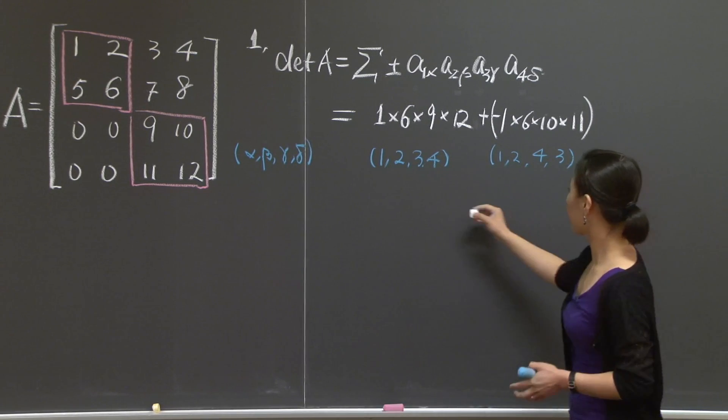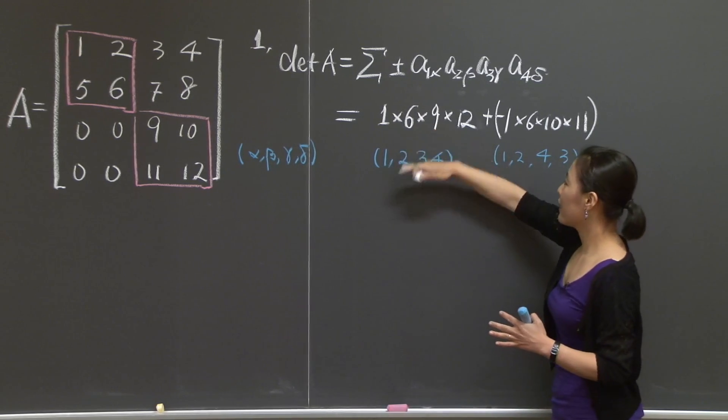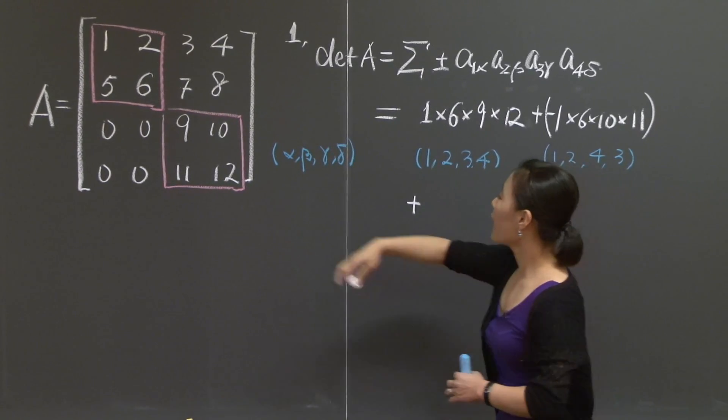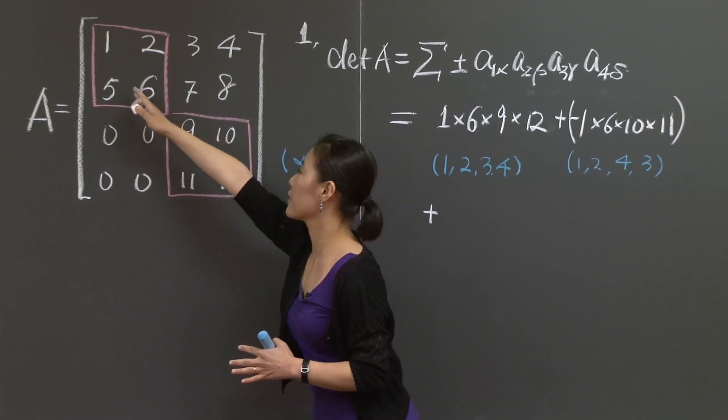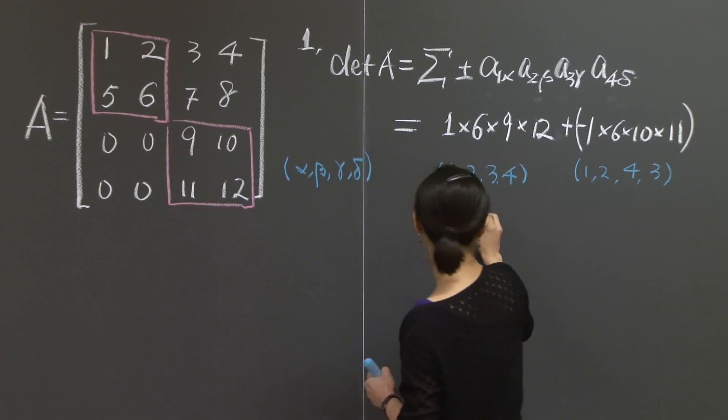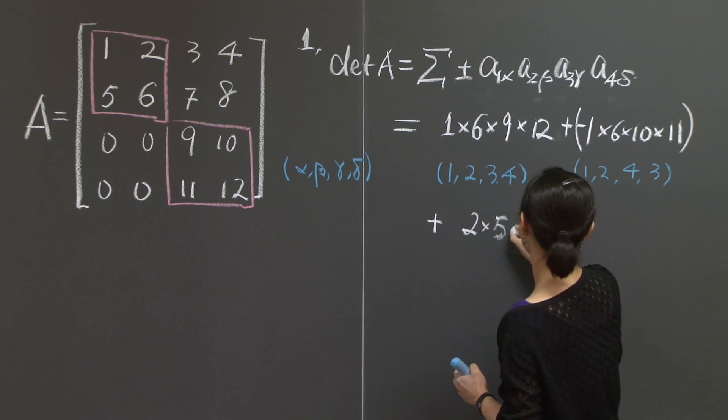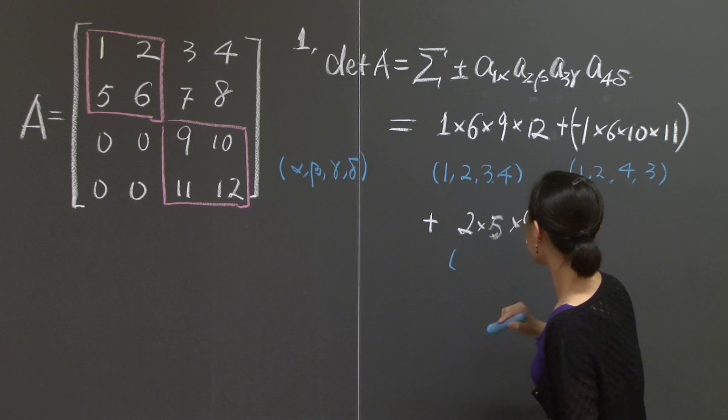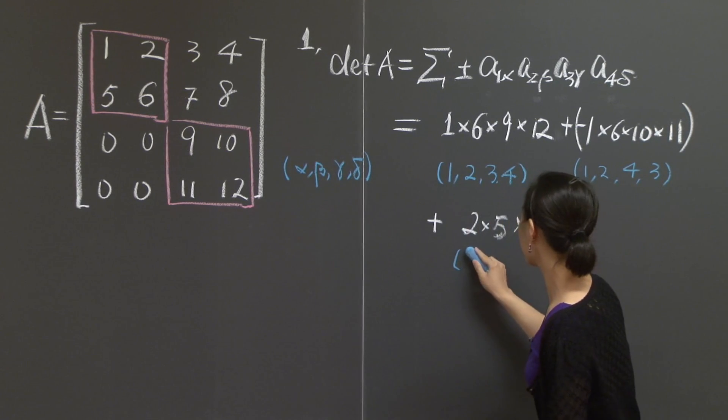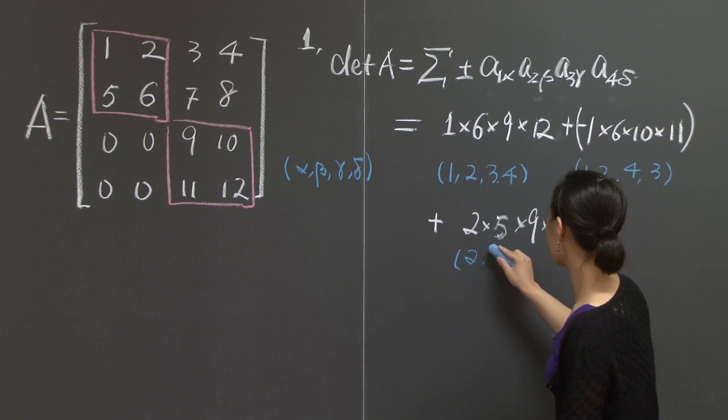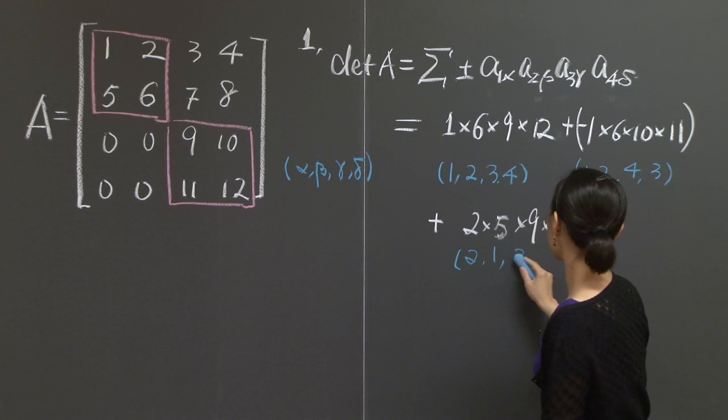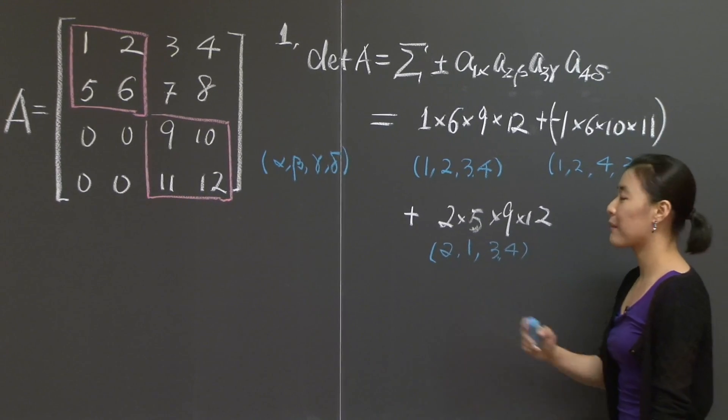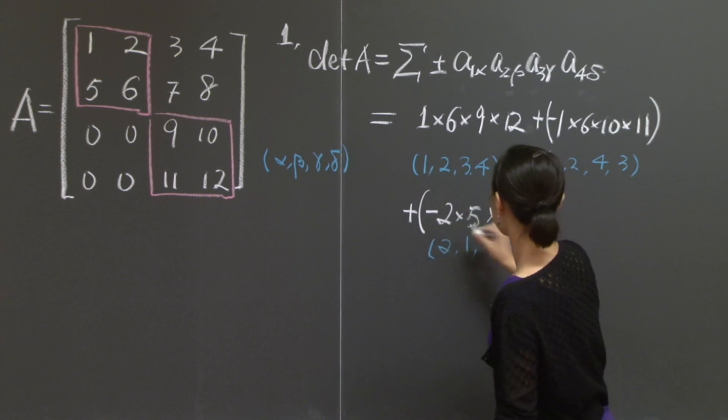Let's continue. I'm going to write it down here. As you can see, the blue part indicates the signature of columns. Next term, I have exhausted the first possibility of choosing 1-6, so let's look at 2-5. 2 times 5 times 9 times 12. What are the column numbers? 2 comes from 1-2 entry, so I have 2 in the front. 5 is 2-1 entry, so 2-1, and then 3-4. Again, I need one exchange to get back to 1, 2, 3, 4, which means I have a negative sign in the front.